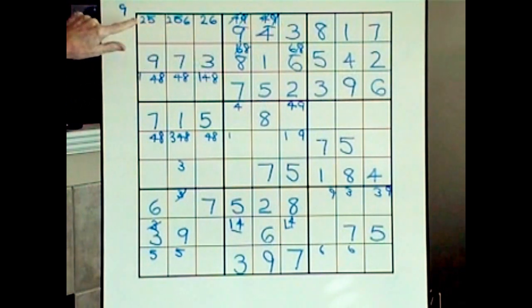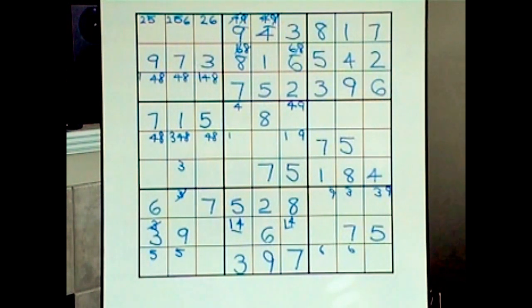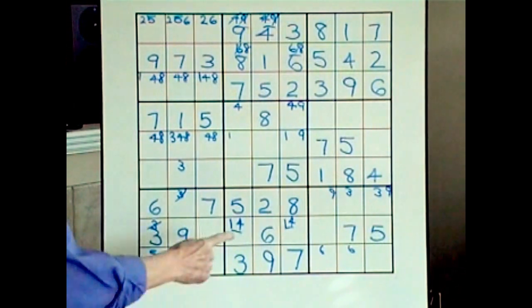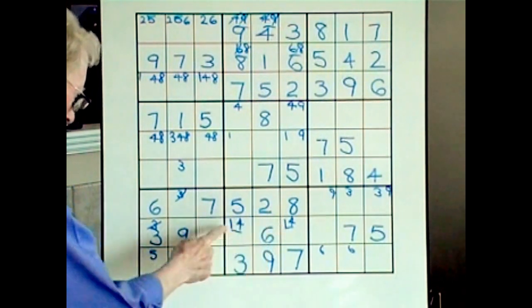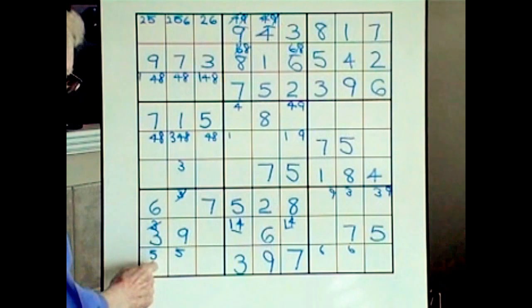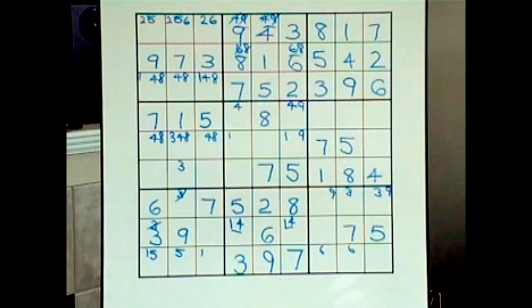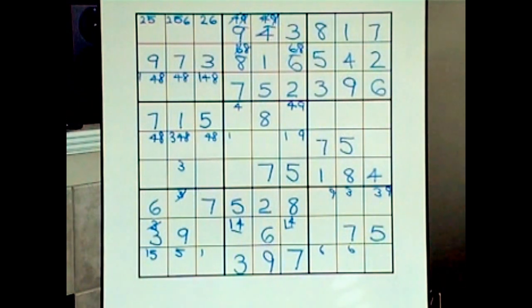Now we know that two, five, and six are the only three numbers that can go there. Moving right along — we were doing the ones in the vertical blocks. I don't see any great spots for a one right away. Let's do some crossing: there's going to be a one here, so going across we can't have a one there because of that one. Therefore we can have a one here and a one there — that's a possibility.